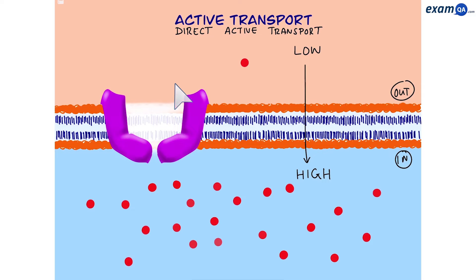Now this was an example of direct active transport. In this scenario the carrier protein had to directly use ATP to move a molecule from a low to a high concentration or against its concentration gradient. So this was one type of active transport.